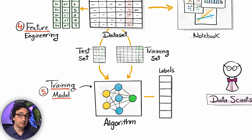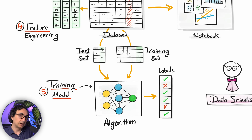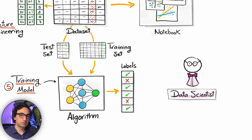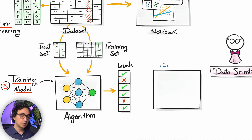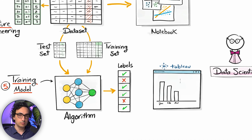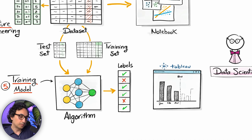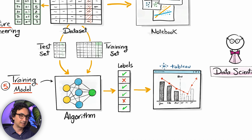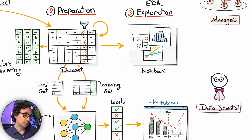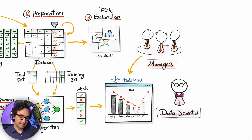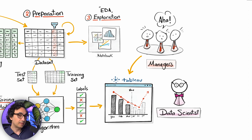The trained model produces predictions — for example, 'yes, this customer is likely to stay' or 'this customer might leave soon,' potentially with a probability score. We then import the data and predictions into Power BI or Tableau to build visuals and present the final results to business users in a friendly, understandable format.